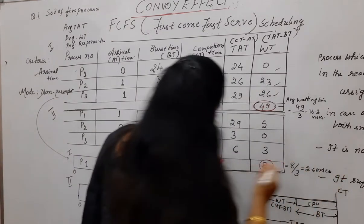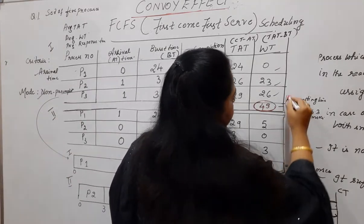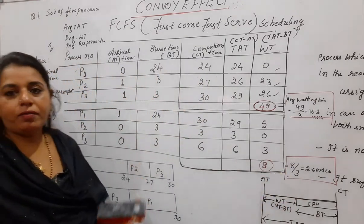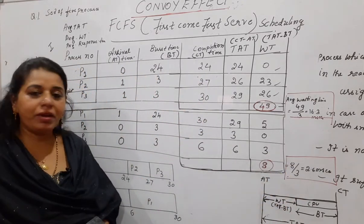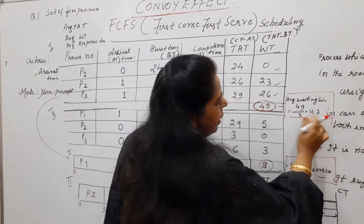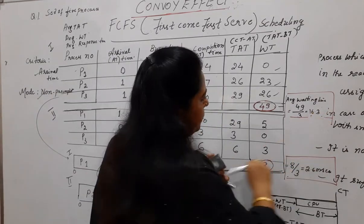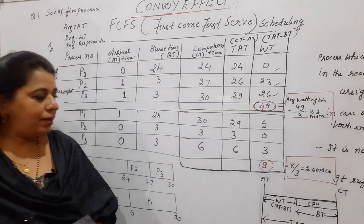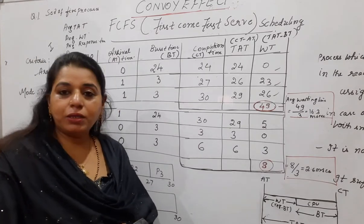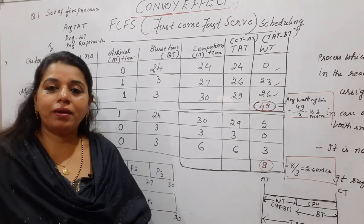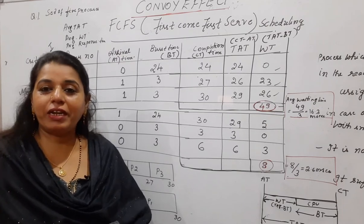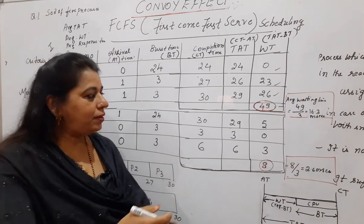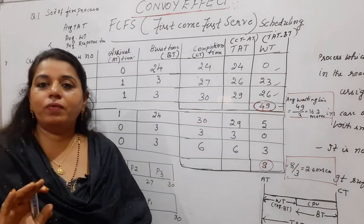I am just writing here and I will make this in a box as the final answer. Now you can arrive at the conclusion. Look at the first situation. You got the average waiting time as 16.3 milliseconds. And here in the second situation you got a very less time, 2.6 milliseconds. This is what we wanted. The goal for any scheduling algorithm should be minimum waiting time, minimum response time, minimum turnaround time.